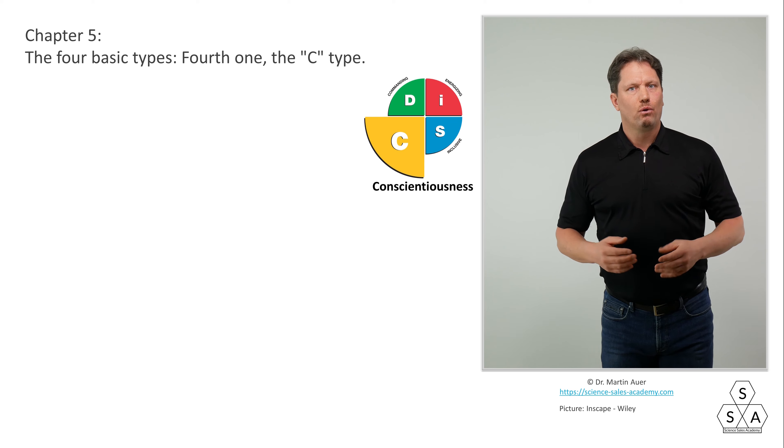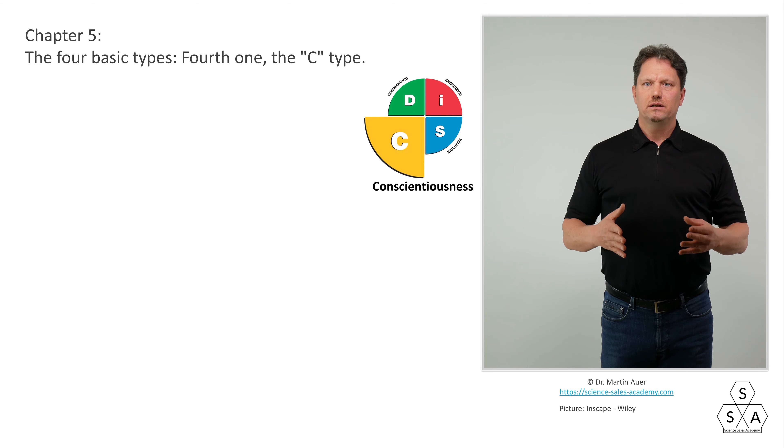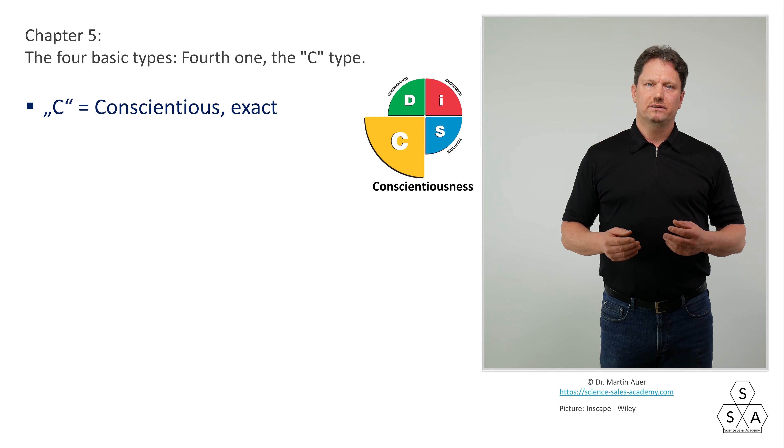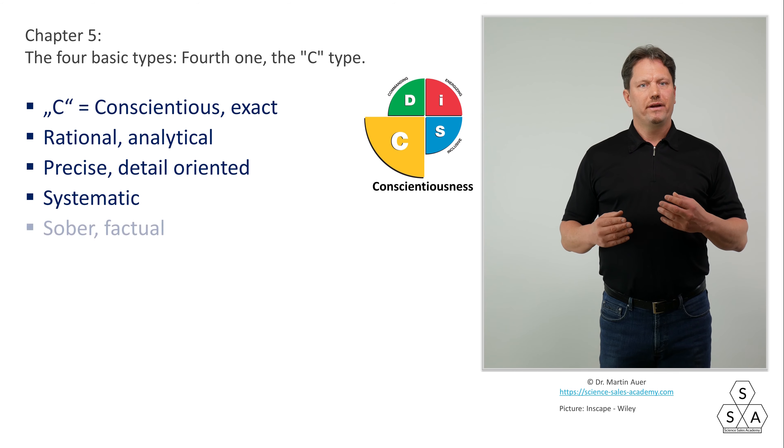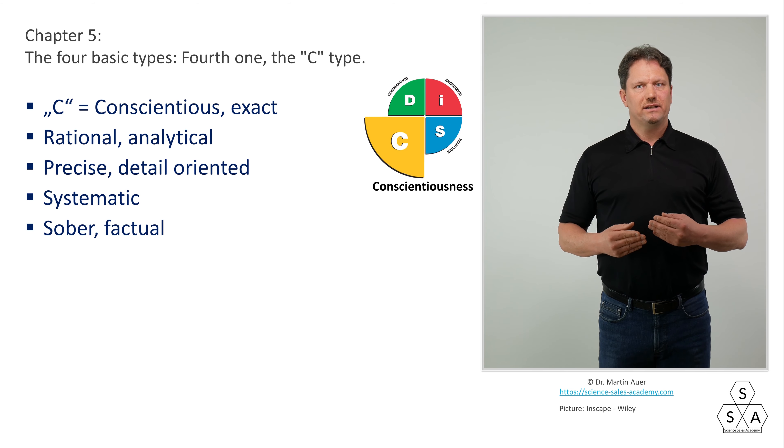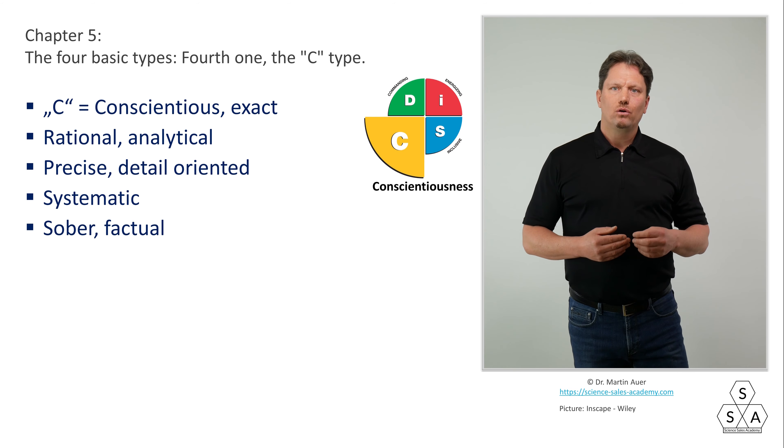Chapter 5: The 4 basic DISC types - the C-type. One step further in our circular Wiley DISC model brings us to the C-type in the lower left quadrant, here with the color yellow. The letter C stands for conscientious. You could also say exact or detail oriented. C-types are rational and analytical, precise, detail oriented and systematic. With their sober and factual nature, they love the conscientious accuracy in every single detail.